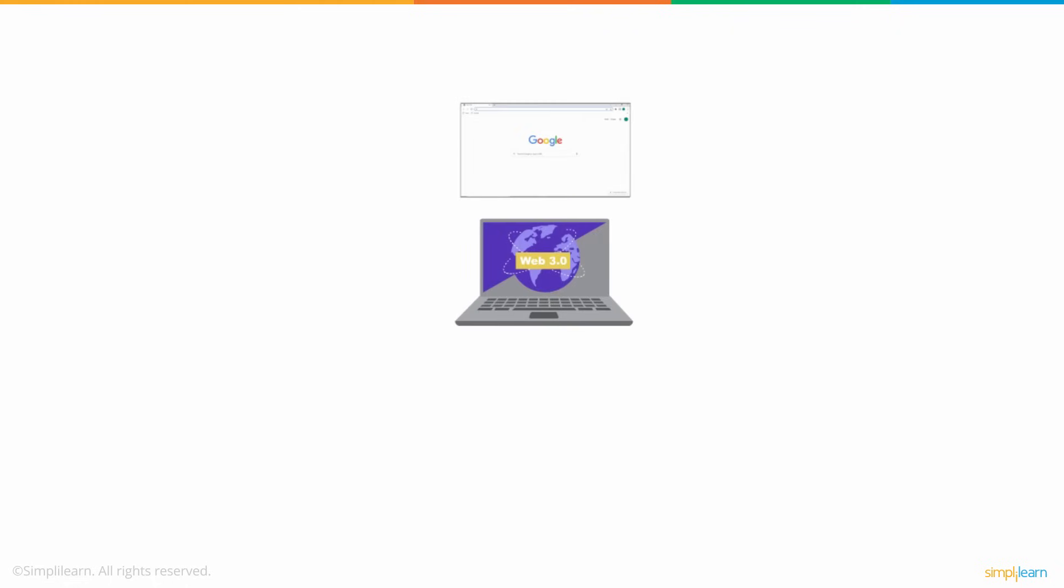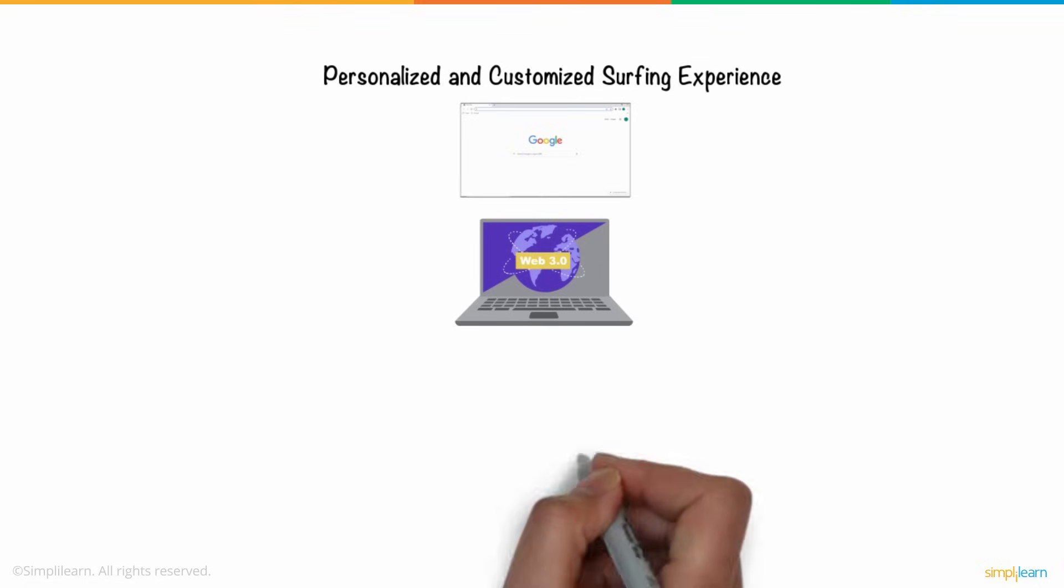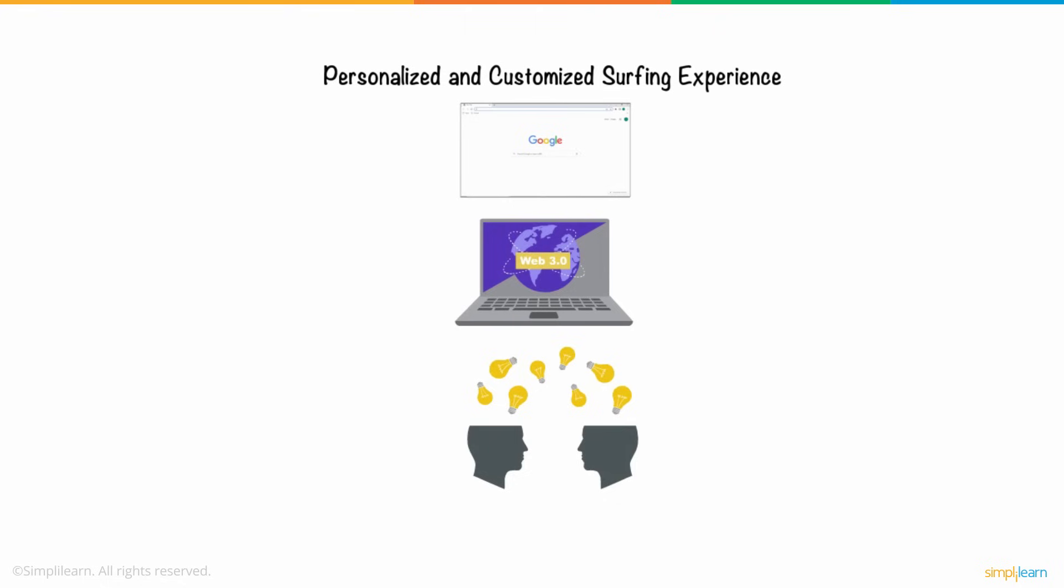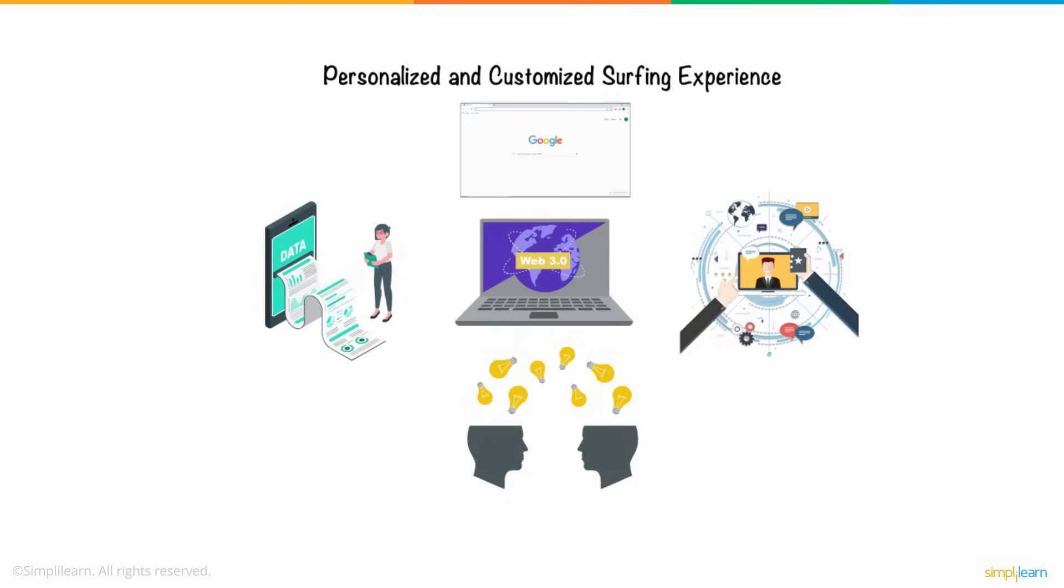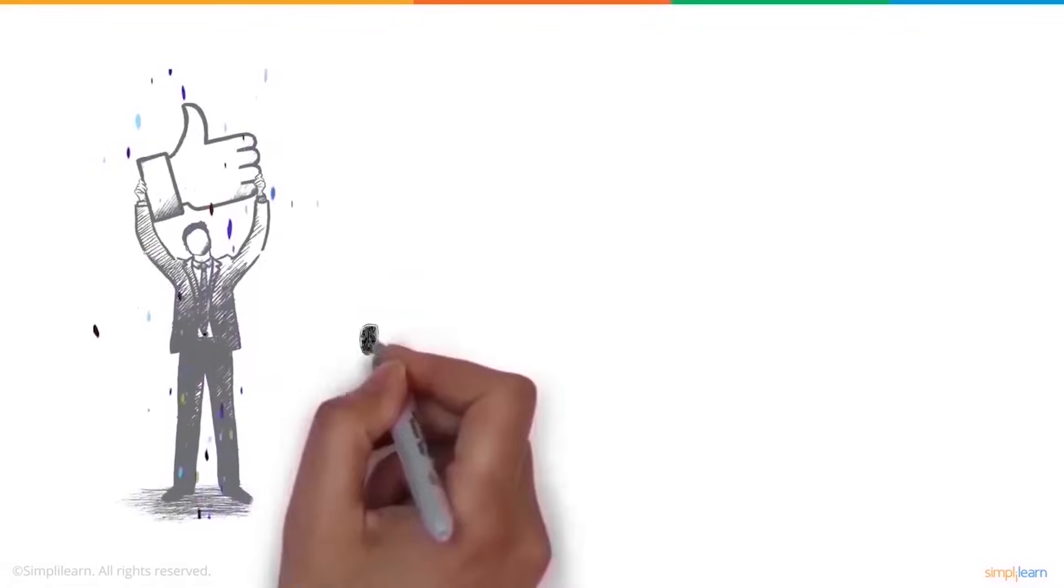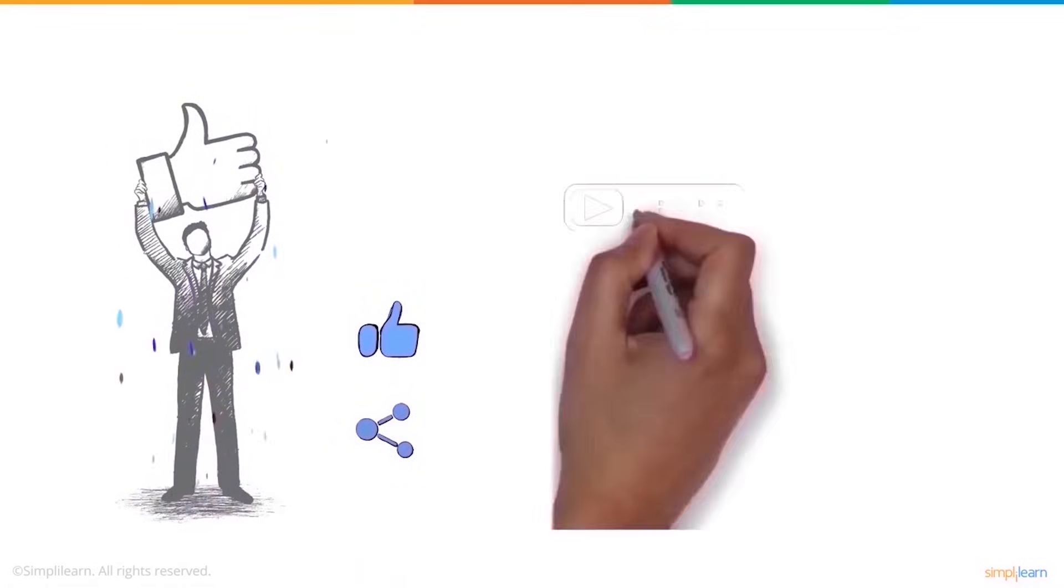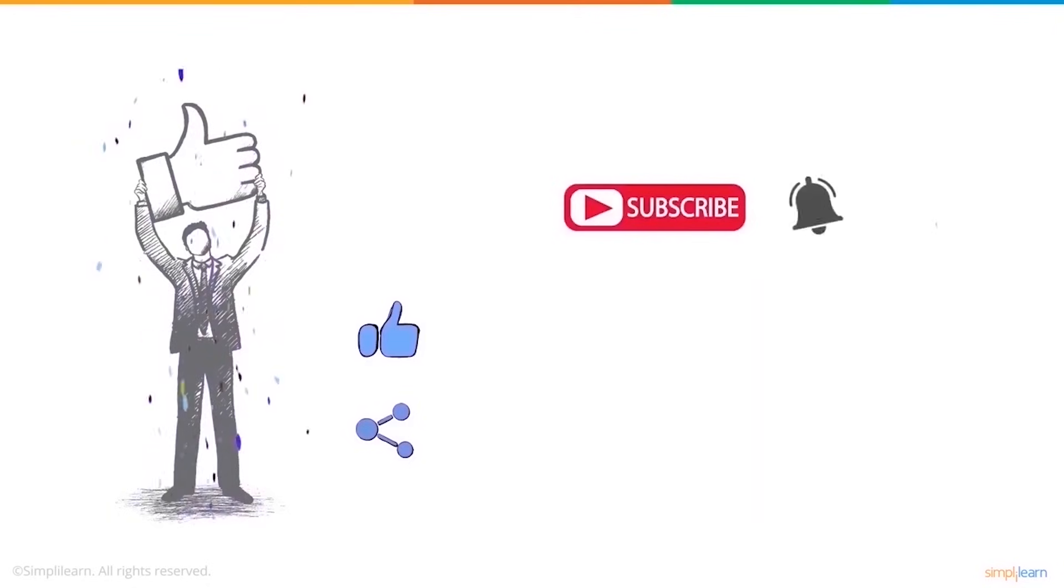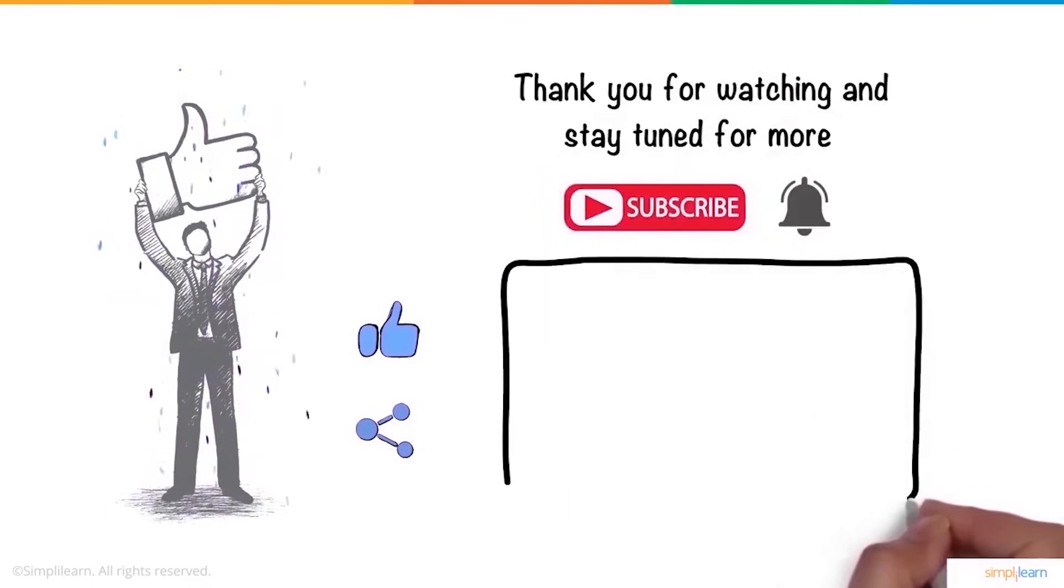Web 3.0 will offer a more personalized and customized surfing experience and a smarter and more human-like search assistant and other decentralized benefits, all of which are believed to contribute to a more fair web. This will be accomplished by giving each user control over their data, resulting in a richer overall experience. In a nutshell, the internet will become considerably more intertwined in our daily lives when Web 3.0 arrives. We hope you enjoyed this video. If you did, a thumbs up would be really appreciated. Here's your reminder to subscribe to our channel and click on the bell icon for more on the latest technologies and trends. Thank you for watching and stay tuned for more from Simply Learn.